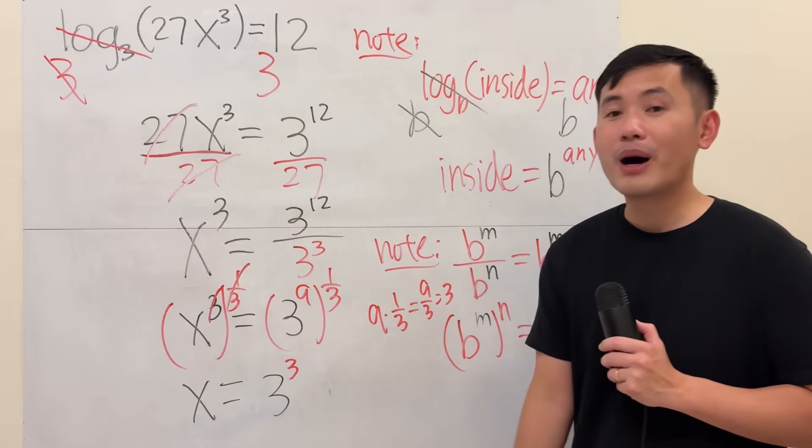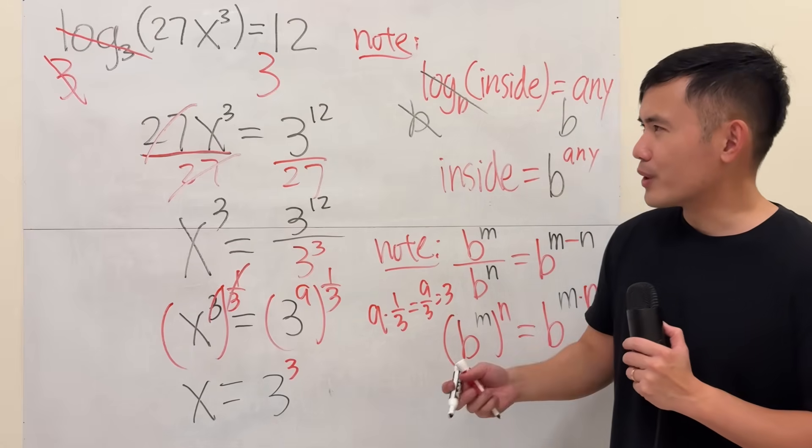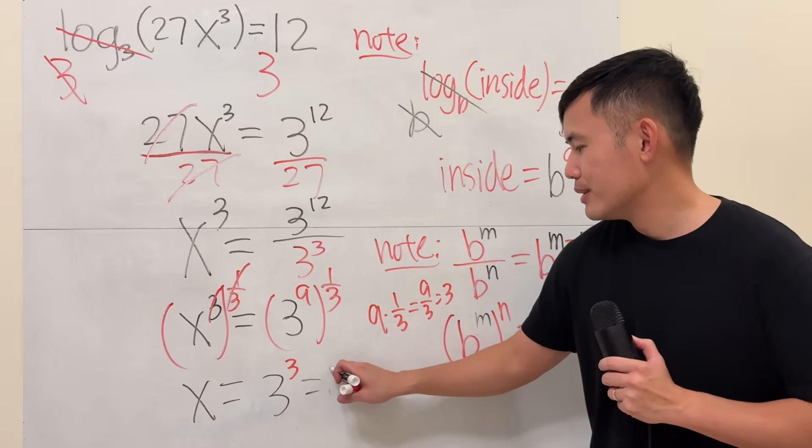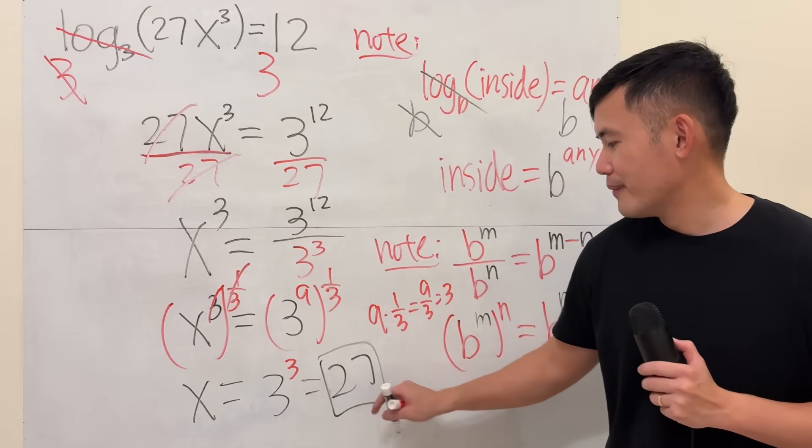So you have 3 to the 3rd power. And 3 to the 3rd power, you work that out again. Then you get 27. So that's the answer.